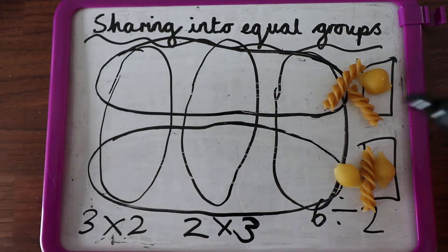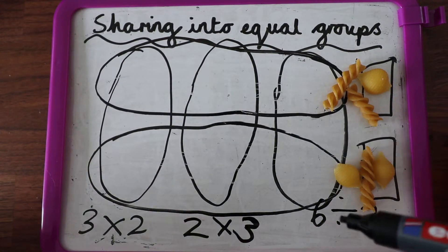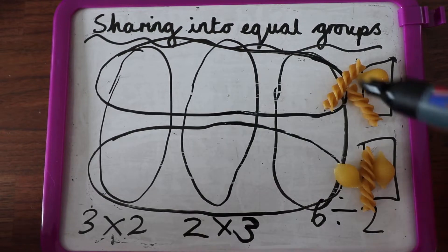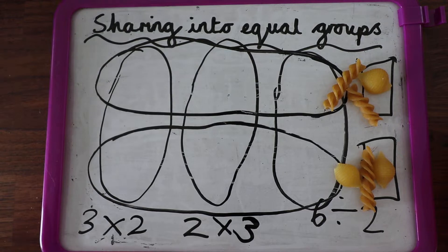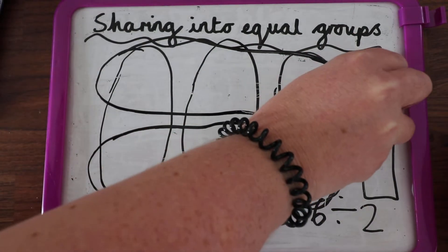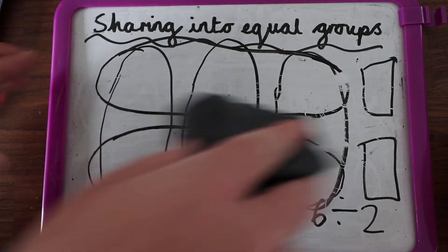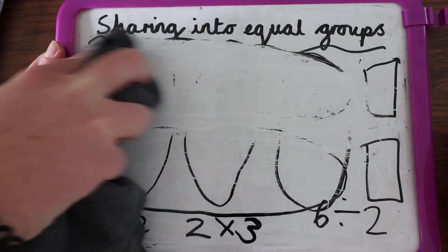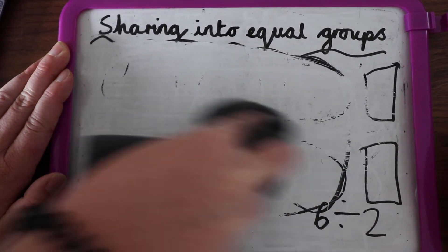Because I made my array and I made it all nice and neat and laid out. So when I do my sharing, six shared by two is three. So now I'm going to let you have a try at one of these and I've shown you. Using your array to help you share.